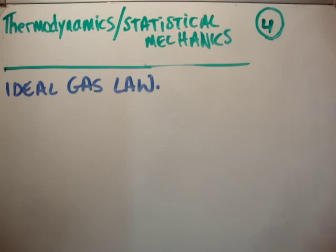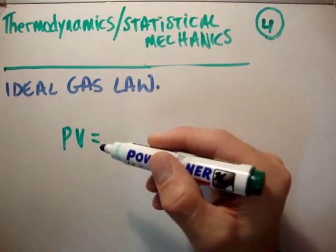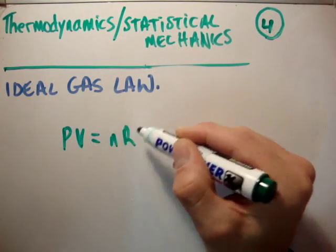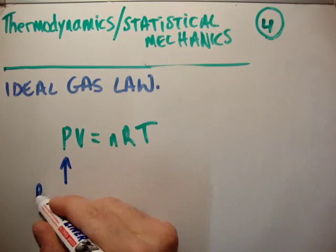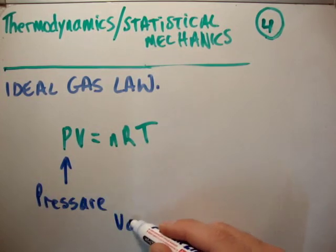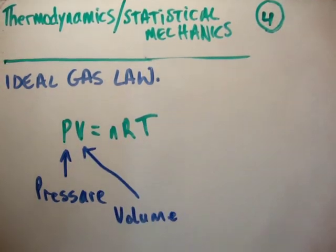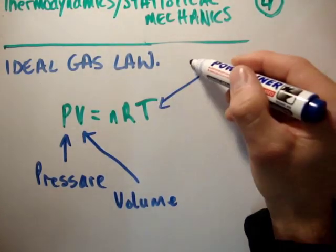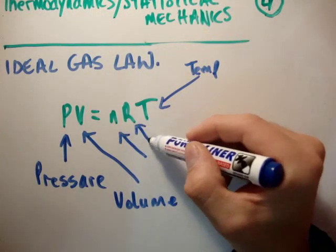So let's write it down. The ideal gas law says that PV is equal to nRT. Let's start and look at the different parameters. We of course have pressure, we have volume, we have temperature. Now what are these two here? What is n and what is r?